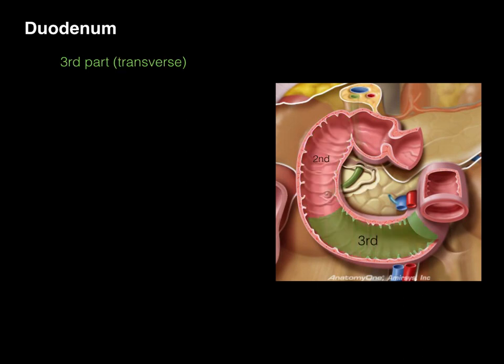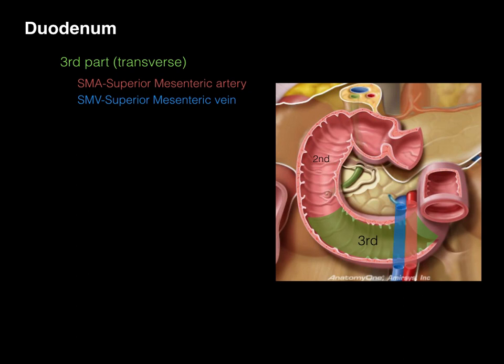The third part of the duodenum is called transverse because this part goes in a horizontal or transverse direction. The third part has the superior mesenteric artery and superior mesenteric vein traversing over top. The vein is always on the right and the artery always on the left — that's one of the distinguishing features of the transverse part.